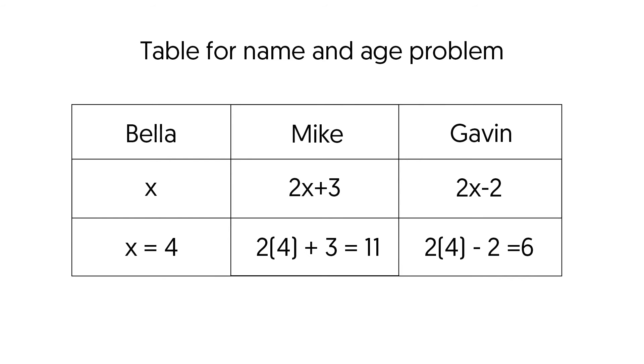For Mike, two times four plus three is equal to 11. For Gavin, two times four minus two is equal to six. So we know that Bella is four, Mike is 11, and Gavin is six.